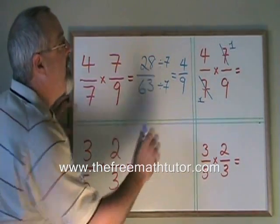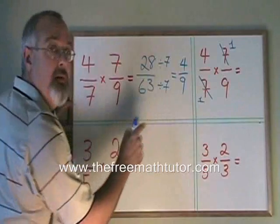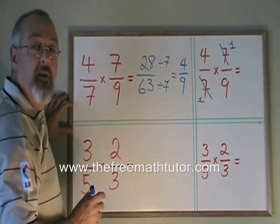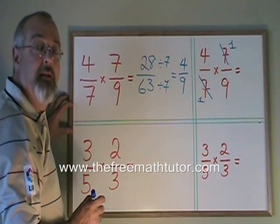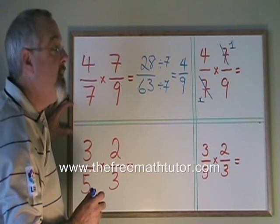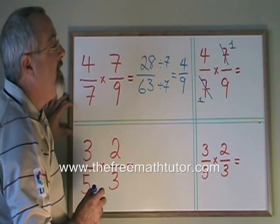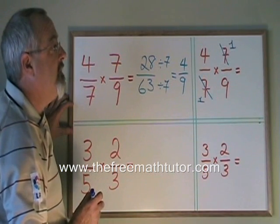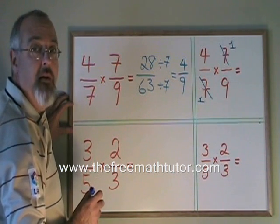It doesn't matter that the 7 on top is not directly above the 7 on the bottom. They don't have to be in the same fraction. The rule is just that one has to be on the top and the other on the bottom.